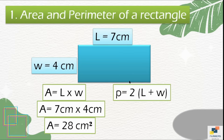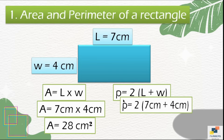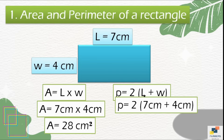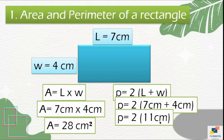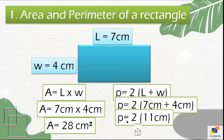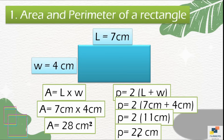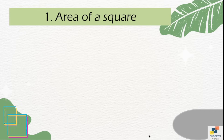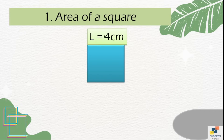Then write the formula of perimeter and put in the values of l and w. Add them up: 7 plus 4 equals 11. Since there is no operation between 2 and the bracket, multiply both, so perimeter is equal to 22 centimeters.